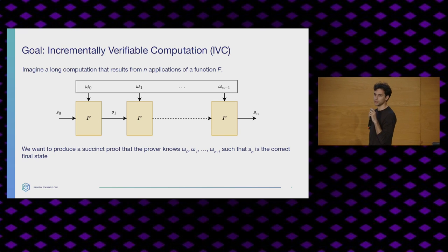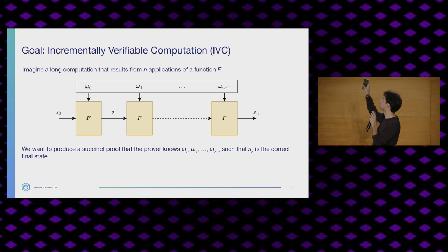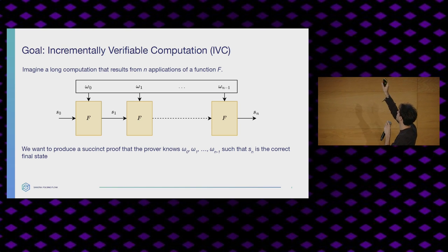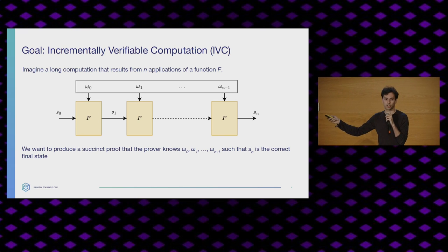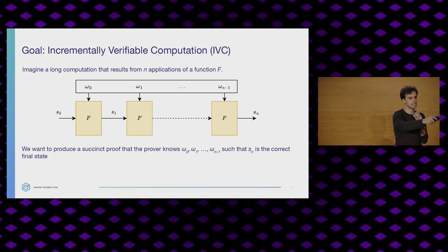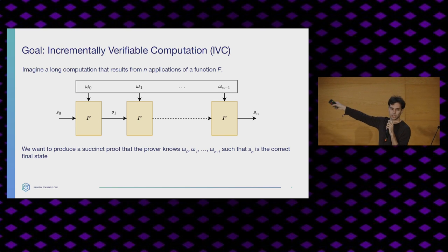What we want is a succinct proof that some prover knows all the private values — ω0 up to ω_{n-1} — such that the final state is correct. The verifier should only have to see the first state and the final state, and doesn't really care what happens in between.